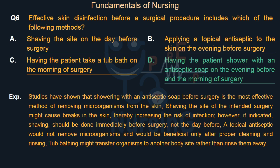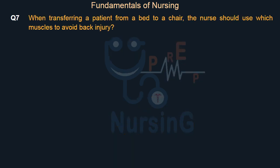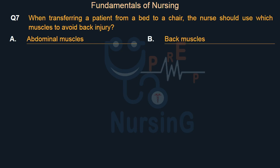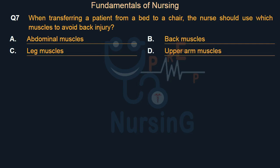When transferring a patient from a bed to a chair, the nurse should use which muscles to avoid back injury? Option A: Abdominal muscles. Option B: Back muscles. Option C: Leg muscles. Option D: Upper arm muscles. Right answer is Option C: Leg muscles.